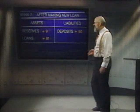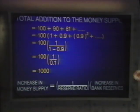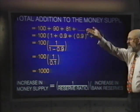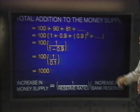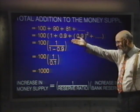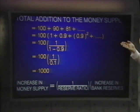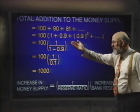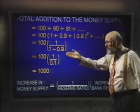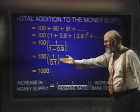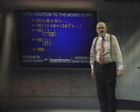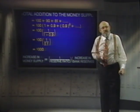To determine the size of this total, we add up all rounds of extra deposits: $100 + $90 + $81 + ... We can rewrite this as 100 × (1 + 0.9 + 0.9² + ...), which equals 100 × 1/(1 − 0.9) = 100 × 1/0.1 = 100 × 10 = $1,000. Thus, because the reserve-to-deposit ratio is 1/10, the money multiplier is the inverse of that, or 10.